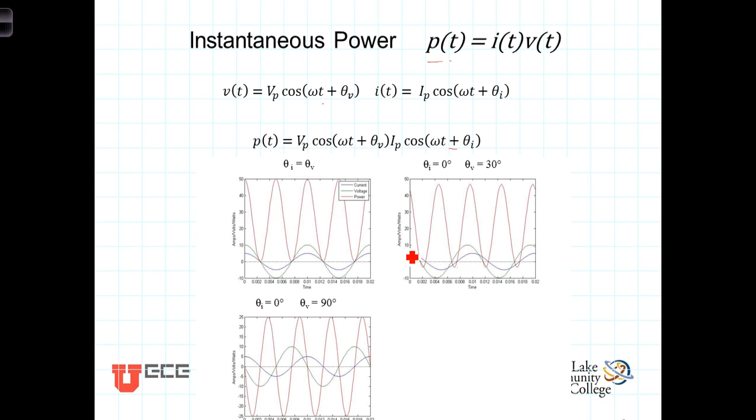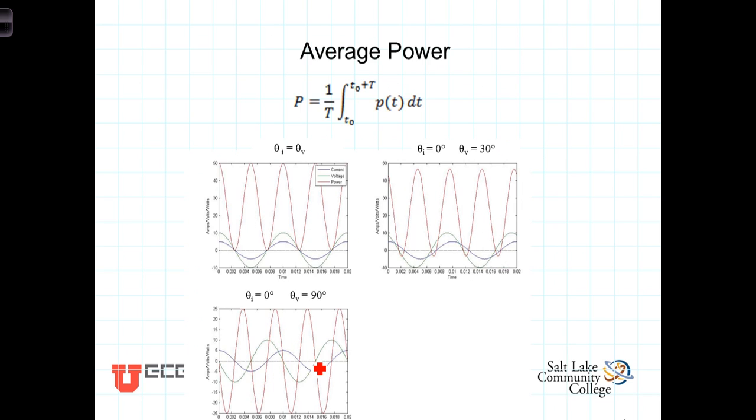Considering the extreme case where the current and voltage are different by 90 degrees: in this case, one is positive, one is negative. Note that the net effect is that you have a positive lobe for half the cycle and a negative lobe for half the cycle. It turns out that the amount of energy put in during this half of the cycle is equal to the amount of energy delivered from the device back into the circuit during that half the cycle. We're going to see that the average power under these circumstances is actually zero.